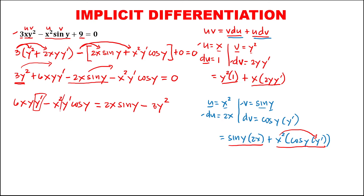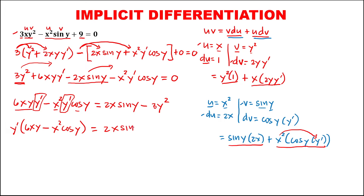Then we need to factor out y prime, so put y prime outside. We have y prime times the remaining: 6xy minus x squared cosine y, then equals 2x sine y minus 3y squared.